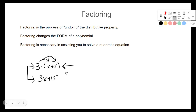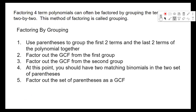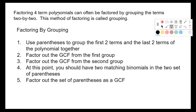The reason we are factoring is because factoring is necessary to help you solve a quadratic equation, which is where we're headed. How do we work with quadratic functions and equations? How do we solve and graph them? Factoring will help us do that — that's why we're on this factoring journey. Today we're going to factor by grouping. To factor a four-term polynomial, it can often be factored by grouping the terms two by two.